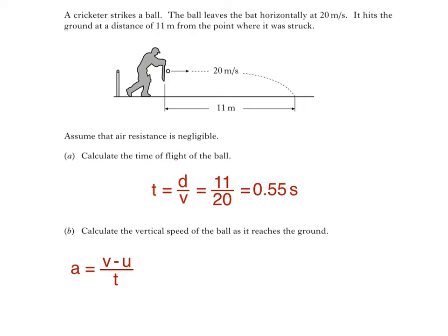u is the ball's initial vertical velocity. Since the ball is initially moving horizontally, u is 0 metres per second. And t is the ball's time of flight, which we found earlier, 0.55 seconds.